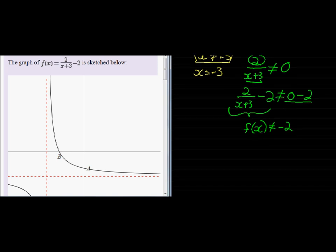Which means y will never be equal to negative 2. That means that my asymptote, the line that my graph tends to but never reaches, it will never reach negative 2. So that is my asymptote.